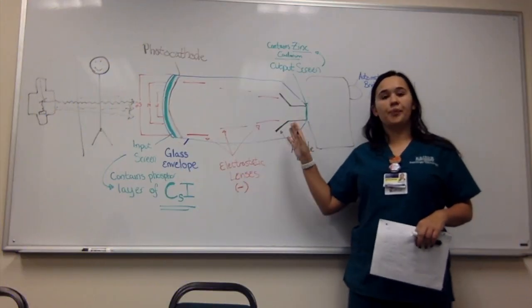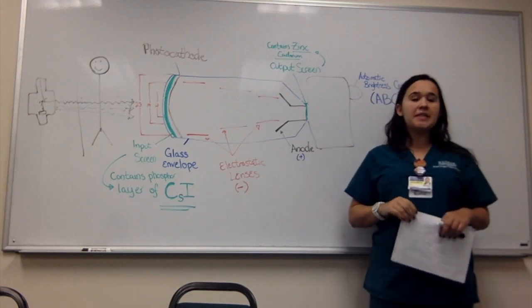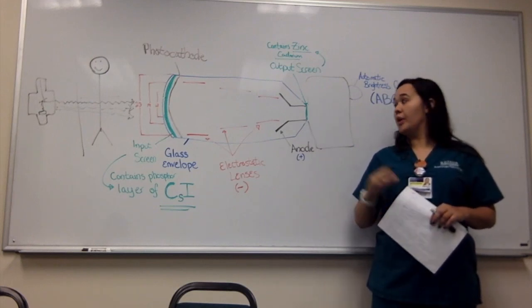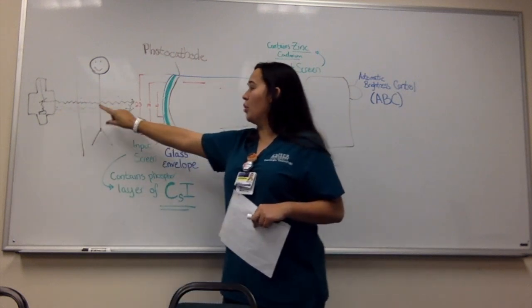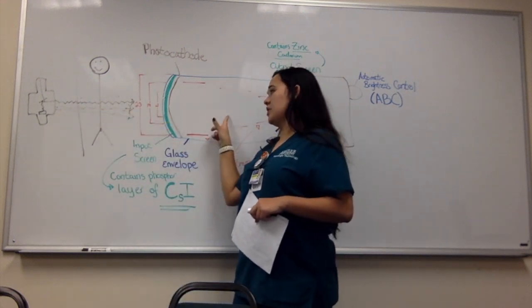This is the image intensifier tube. In fluoroscopy, the image intensifier tube is to increase the brightness. So over here we have the x-ray tube where the photons come out, go through the patient, and towards the image intensifier.